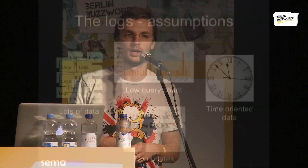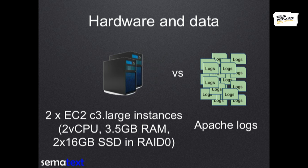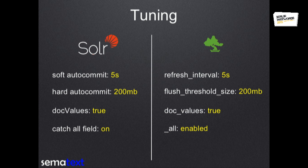Let's move on to the logs use case, which typically has a completely different pattern. You have lots of data coming in, lots of data being deleted every day because you have a fixed retention. You don't have that many queries, but those queries may be more expensive if you run them on more data. There are no updates once you write a log entry. We had the same clusters for testing, only this time we indexed Apache logs over and over again. On the settings side, we tried to have equivalent configurations with the same sort of schemas.